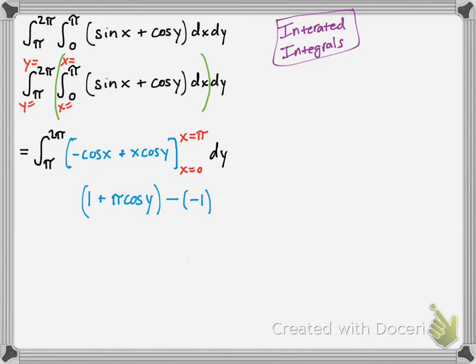And then you plug in pi for x. Sorry about that. Something happened. But you get pi, I think I said. And then you plug in x for 0. And then you get negative 1. And since you're minusing a negative value, it becomes positive.